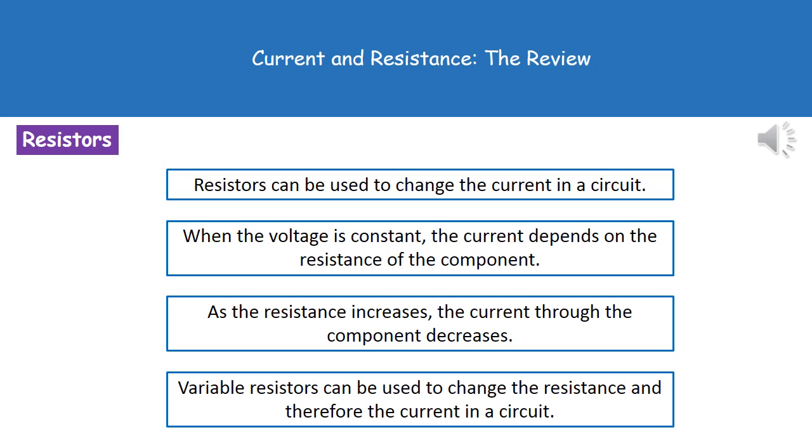So what we can actually use is something called a variable resistor. And then we can change the resistance at any given time and therefore change the current. And this is what we're actually doing when using those dimmer switches on those lights at home.